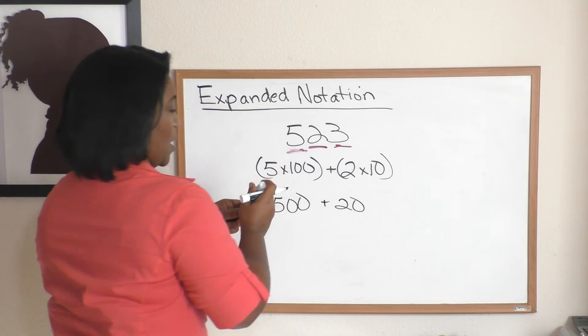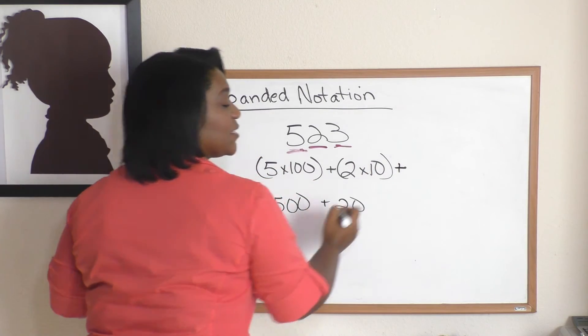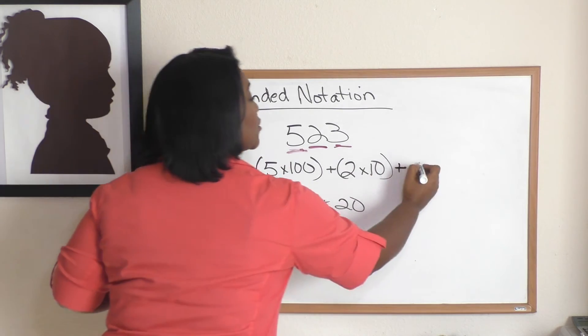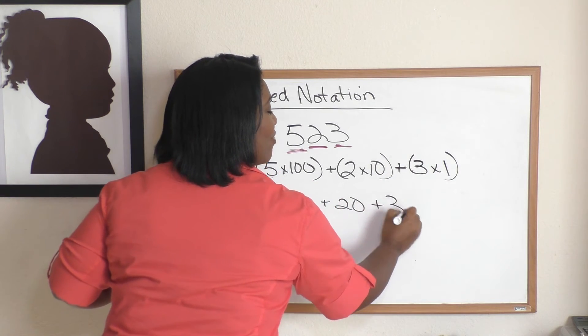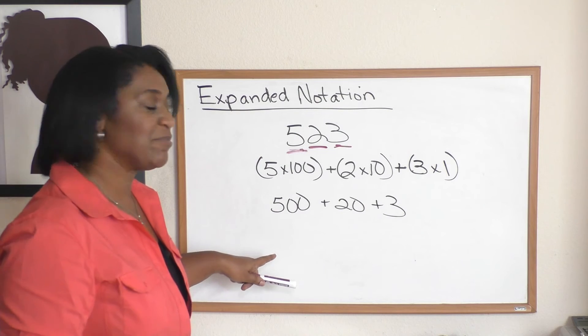What about the three? I can highlight that too. The three we're going to add. This is in the ones place, so this is going to be three times one, and we're going to add three.